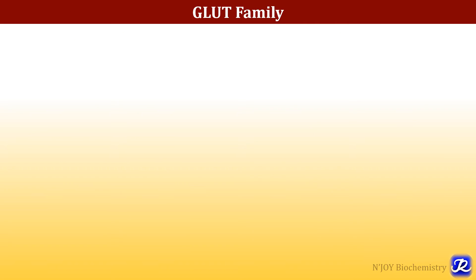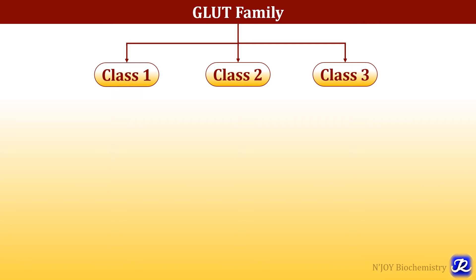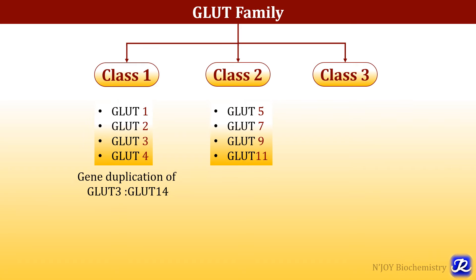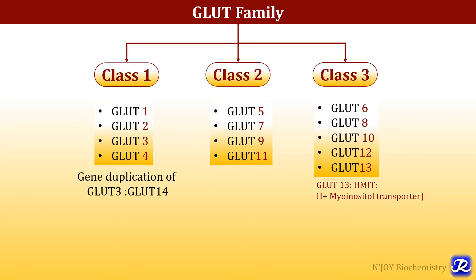The GLUT family has three classes. GLUTs 1, 2, 3, and 4 are present as class 1, and GLUT 14 — which is a gene duplication of GLUT 3 — is also included in class 1. GLUTs 5, 7, 9, and 11 belong to class 2. GLUTs 6, 8, 10, 12, and 13 belong to class 3. Out of all these GLUTs, only GLUTs 1 to 5 are well characterized.